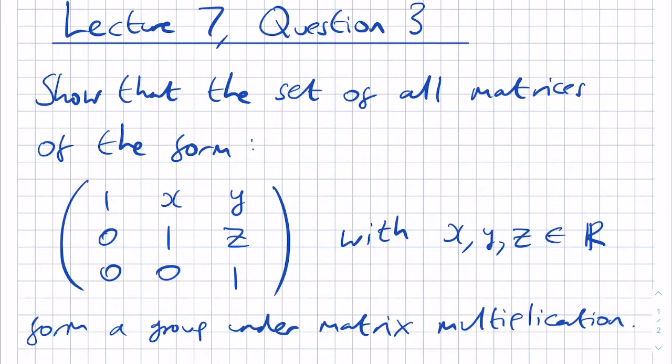The question says, show that the set of all matrices of the form 1XY01Z001, with X, Y, Z being real numbers, form a group under matrix multiplication,